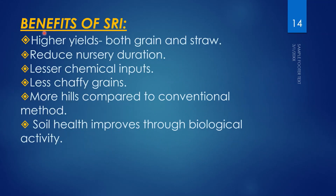The benefits of SRI include higher yields of both grain and straw due to more hills, panicles, and grains. Nursery duration is reduced to 8 to 12 days compared to 25 to 30 days in the conventional method. Lesser chemical inputs are needed since weeding promotes atmospheric nitrogen fixation. There are less chaffy grains, more tillers, and soil health improves through biological activity as weeds decompose into the soil.